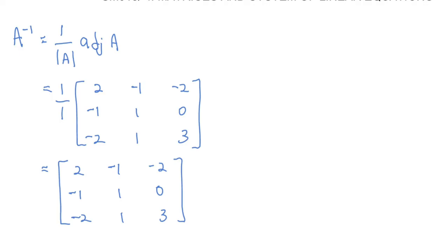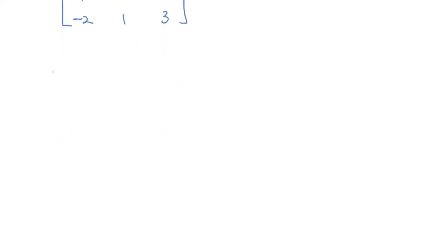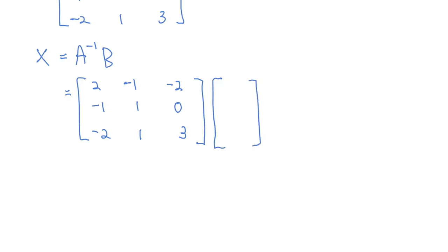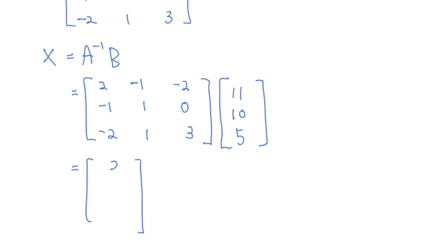Since the question asks for x, y, and z, we continue with X equals A inverse times B. Multiplying [2,-1,-2; -1,1,0; -2,1,3] by [11; 10; 5] gives the final answer [2; -1; 3]. The conclusion: x equals 2, y equals negative 1, and z equals 3. That's how you solve the system of linear equations for 3 unknowns using the adjoint method.